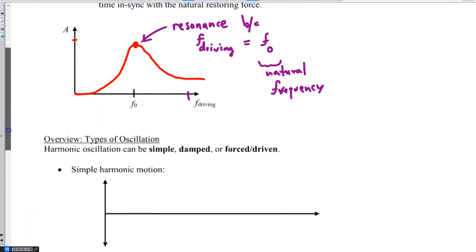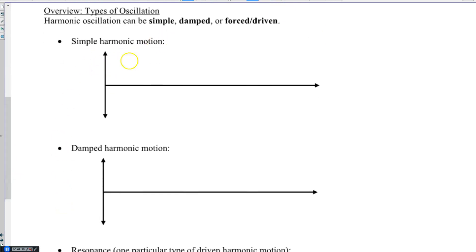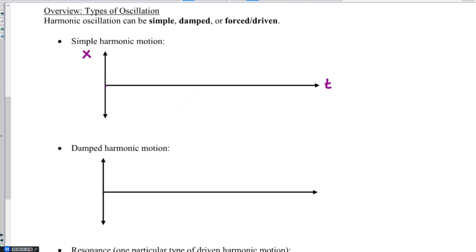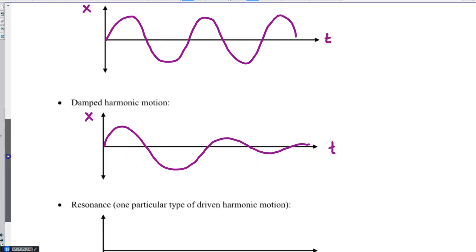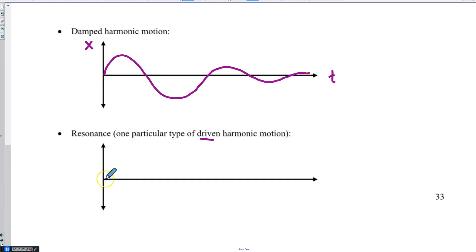We can put this all together because now we know the three types of oscillation. Simple harmonic motion is when the position changes with time and those oscillations are sinusoidal — they look like a wave shape, and the amplitude stays the same. Damped harmonic motion is where the amplitude gets smaller with time. Resonance, which is one type of driven harmonic motion, starts small and the amplitude grows with time, so your maximum position gets bigger and bigger.